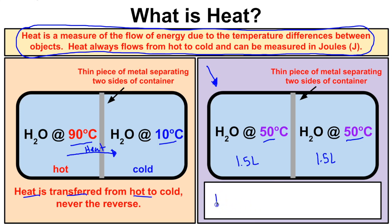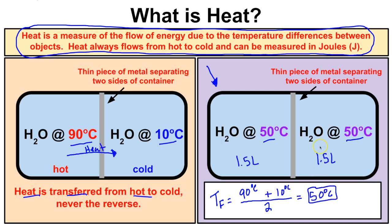To find the final temperature, we take the temperature on the left — 90 degrees Celsius — plus the temperature on the right — 10 degrees Celsius — and divide by 2, giving us 50 degrees Celsius. We can also measure how much thermal energy or heat one side absorbed and the other lost, in a unit called the joule (J).